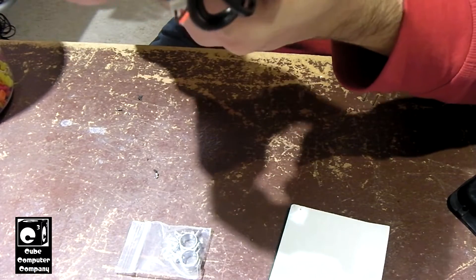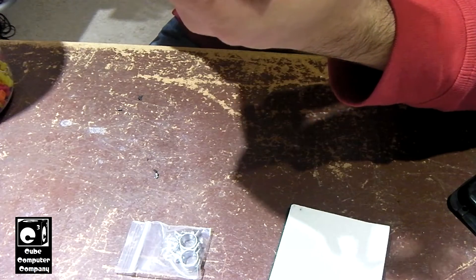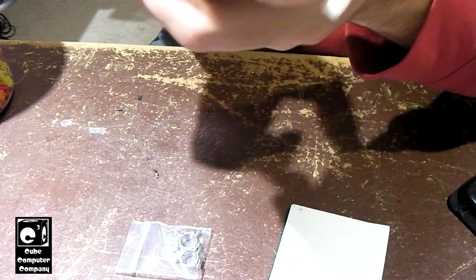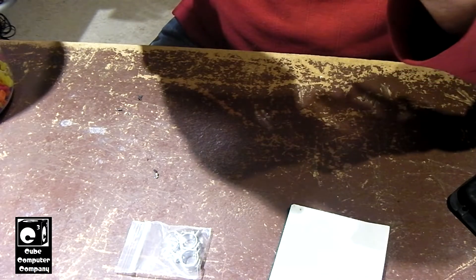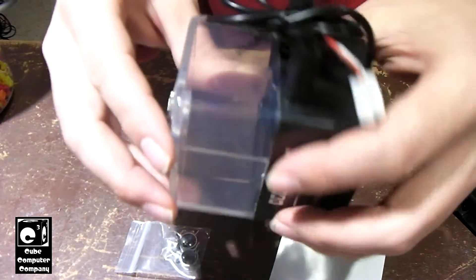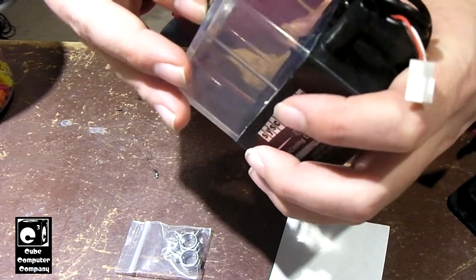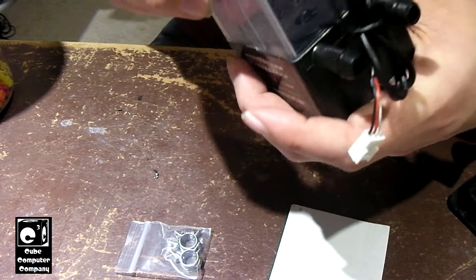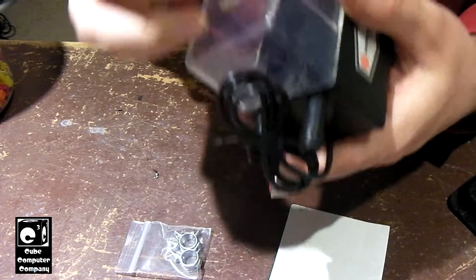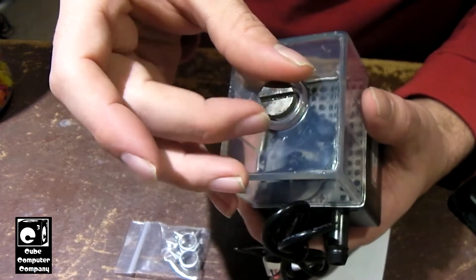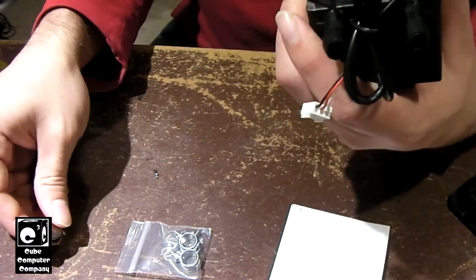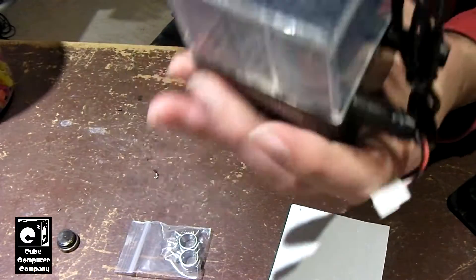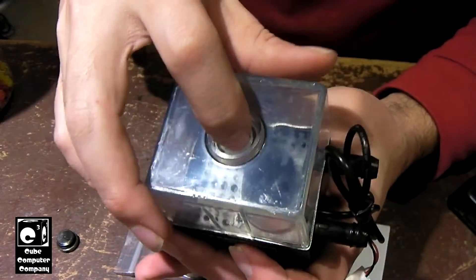And I tell you, I certainly hope they did a good job gluing this whole thing together, because that could be a future area of concern for leaks. You have this little fill cap here. It's got a little rubber O-ring on it. This is where you'll fill the coolant into the system.